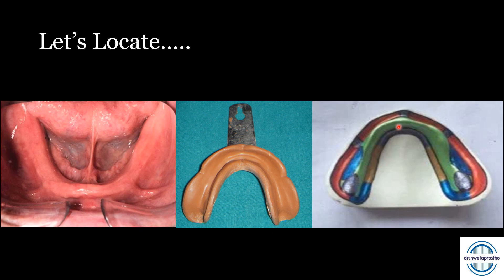This is the lingual flange that we get, and this is the lingual vestibule — it has been divided into three parts, which we will discuss. This is the retromolar pad, which helps in retention. This is the fossa that we get in the impression. Here is the retromolar pad marked on both sides, and the blue color you can see is the buccal shelf area — the primary stress-bearing area.